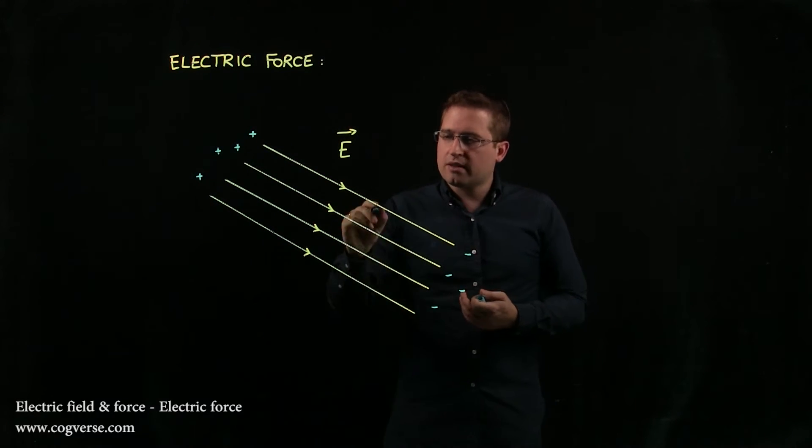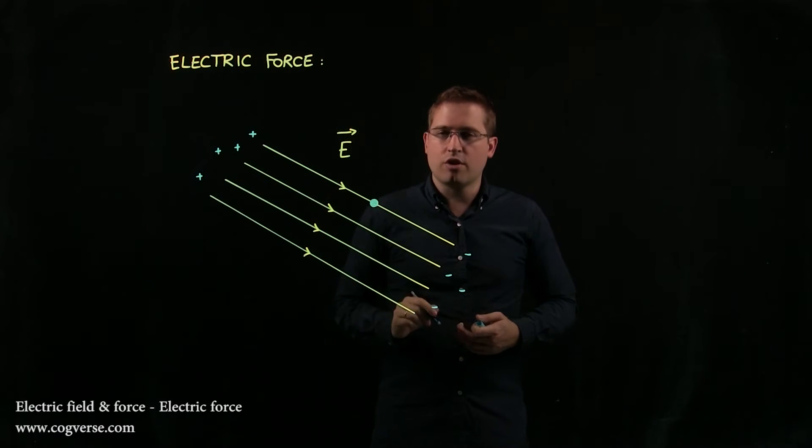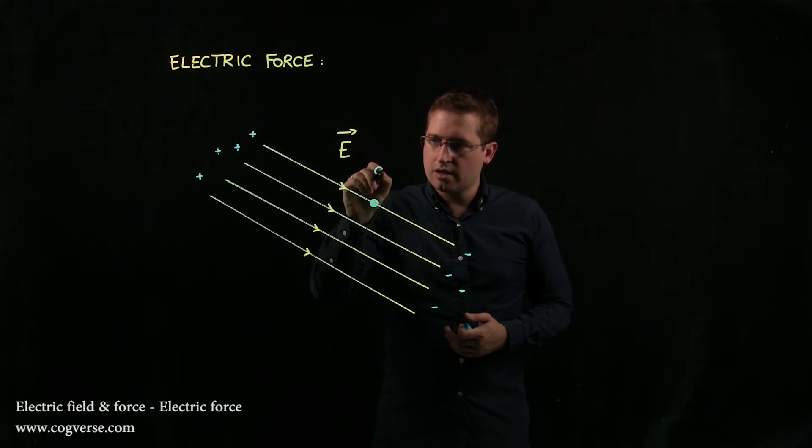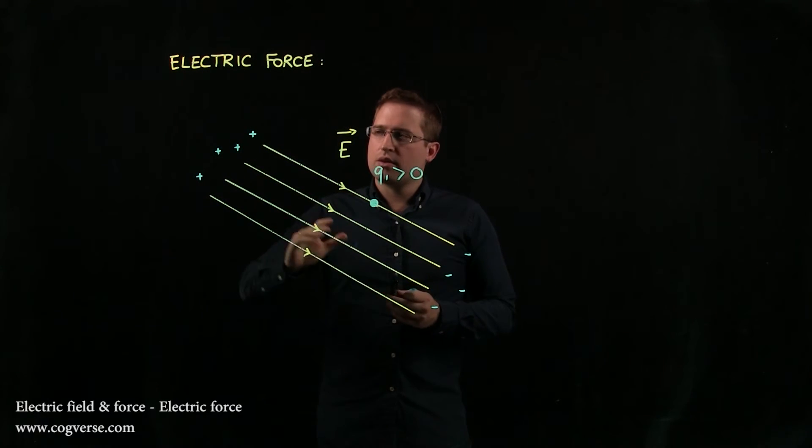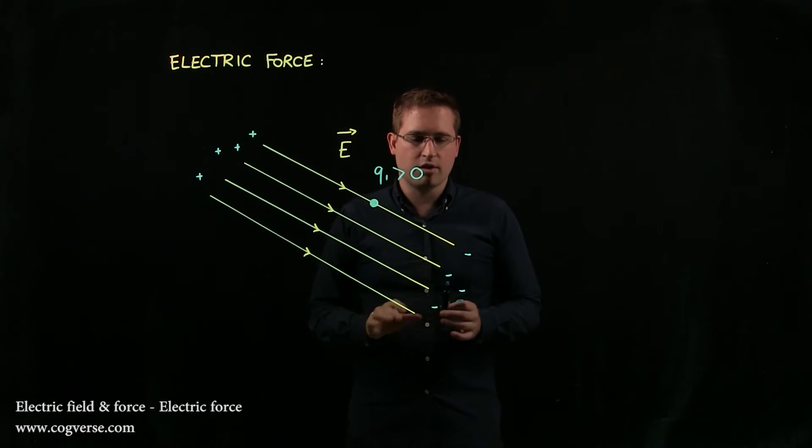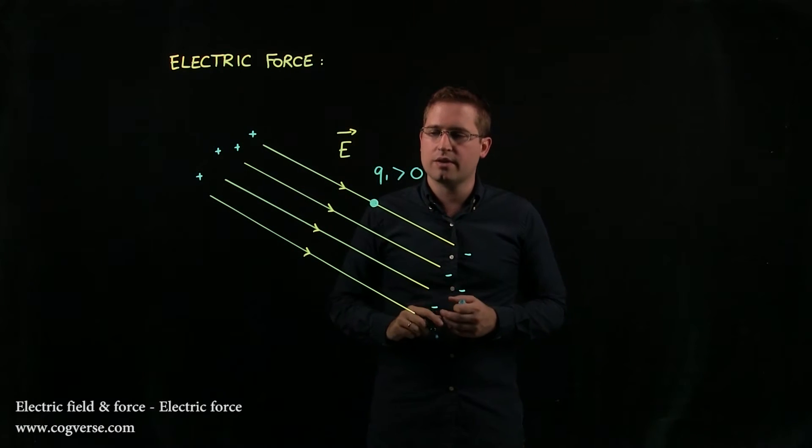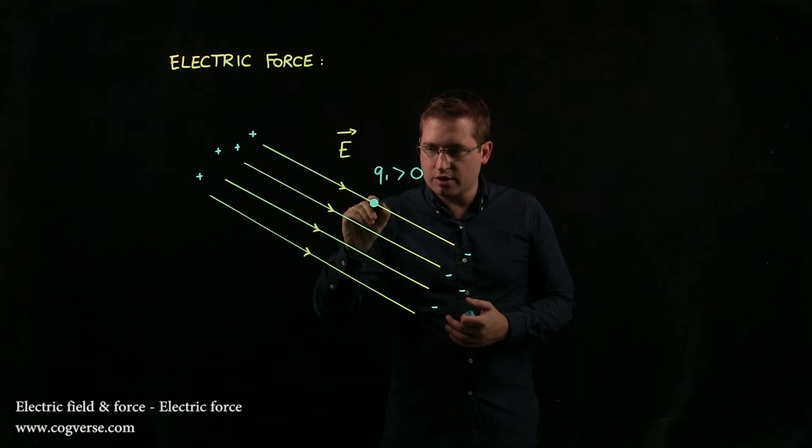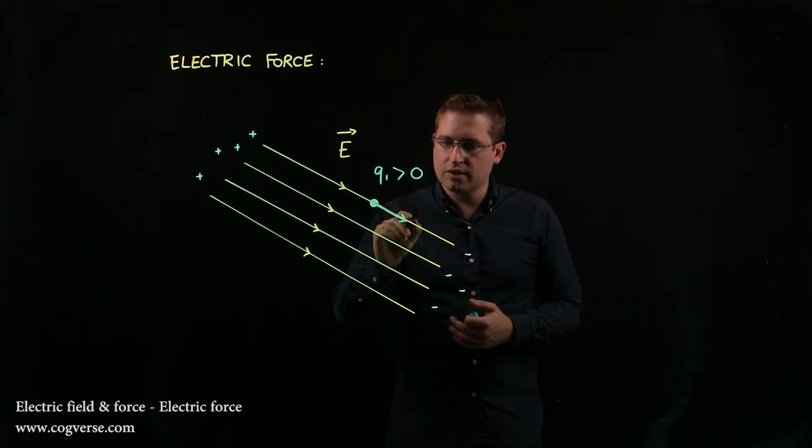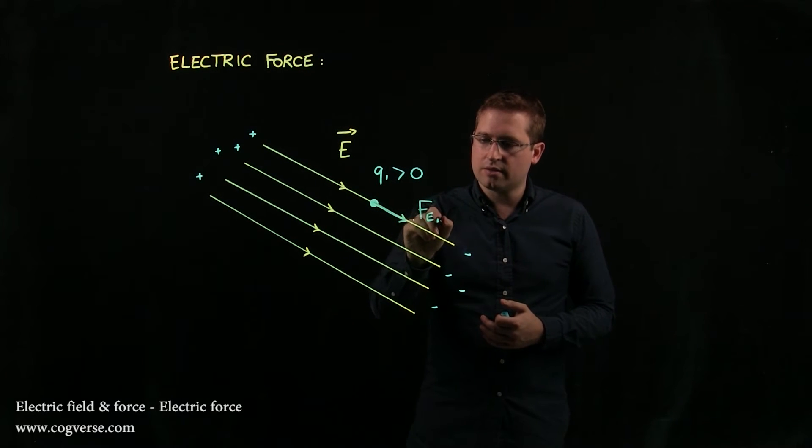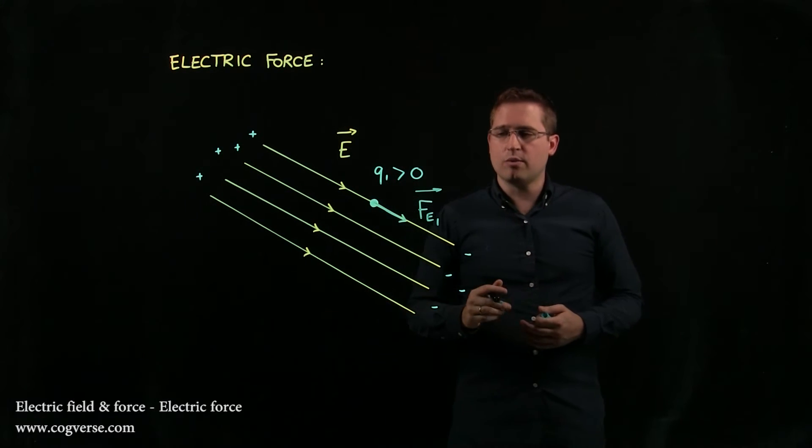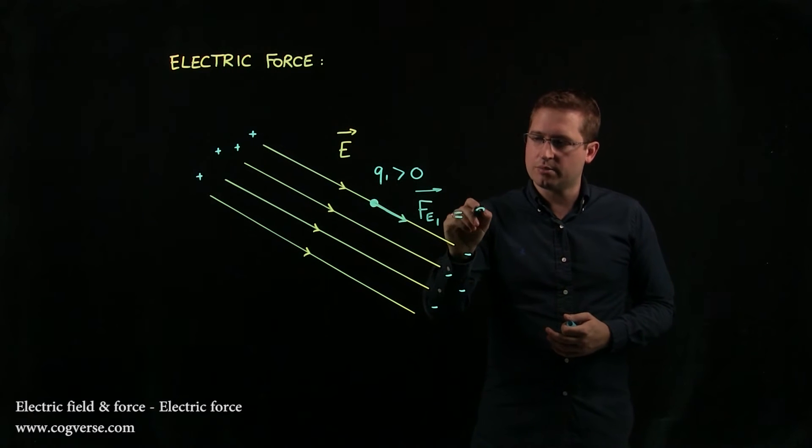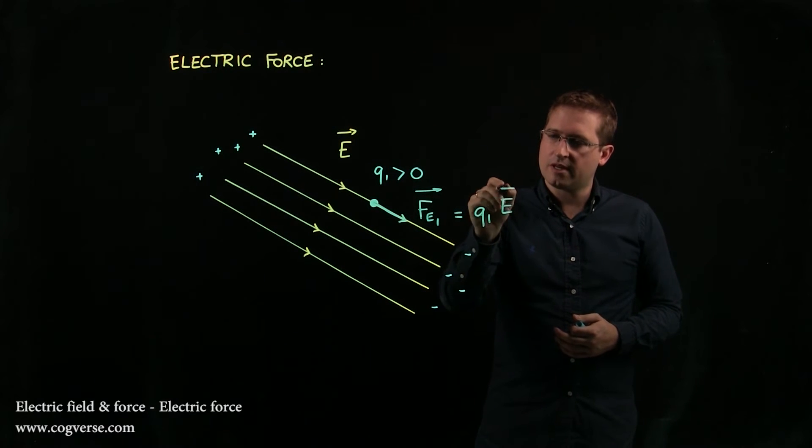we suspect that if we put a positive charge here, let's say Q1 positive, well, Q1 is going to be repelled by this positive area and attracted by this negative area. And in fact, it's going to experience an electric force that's going to pull it along the electric field like this. And this is going to be Fe1. And the expression for Fe1 is simply going to be Q1 times E.